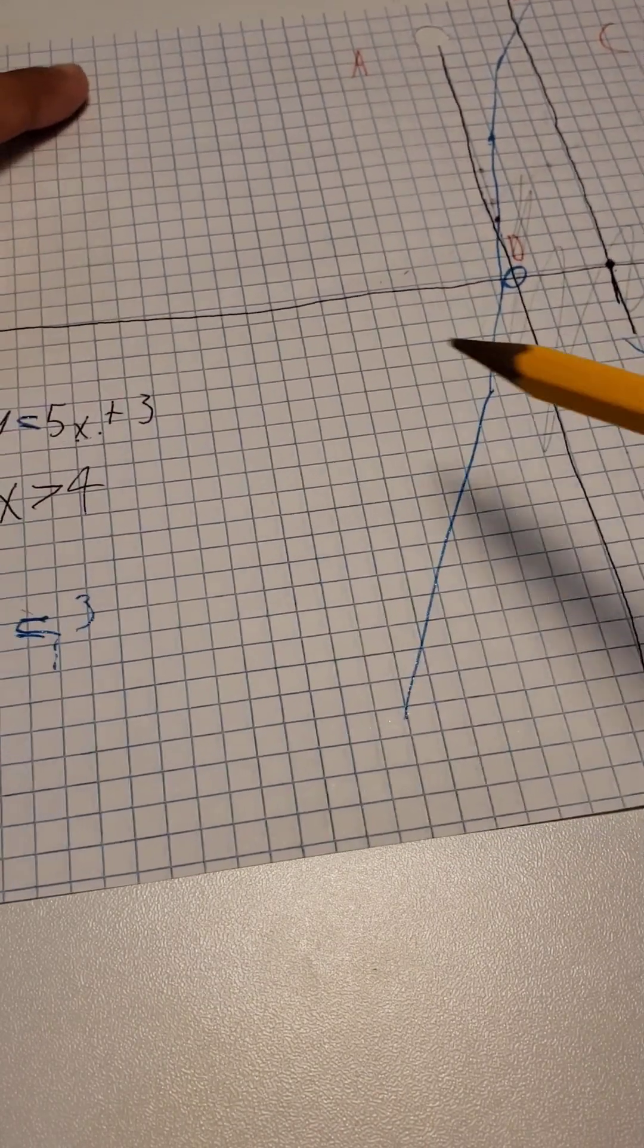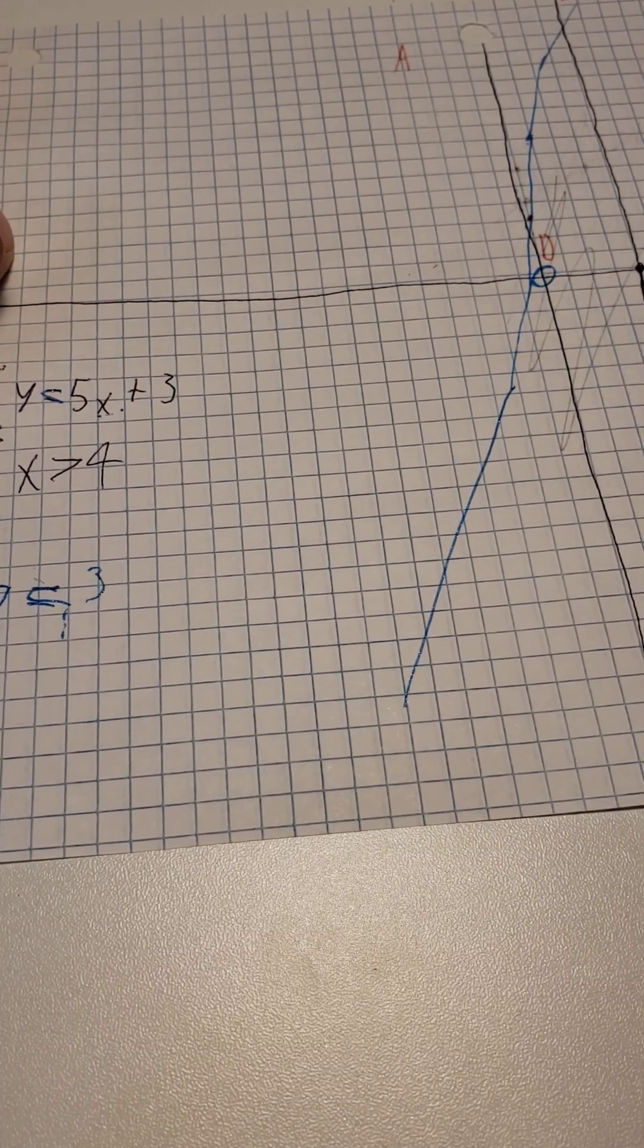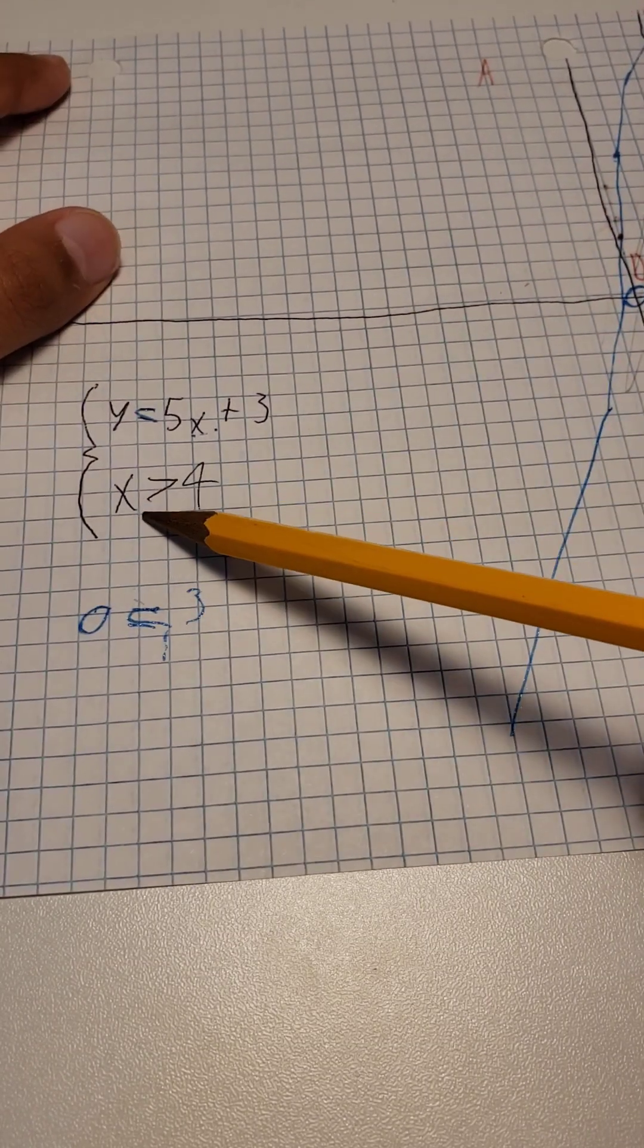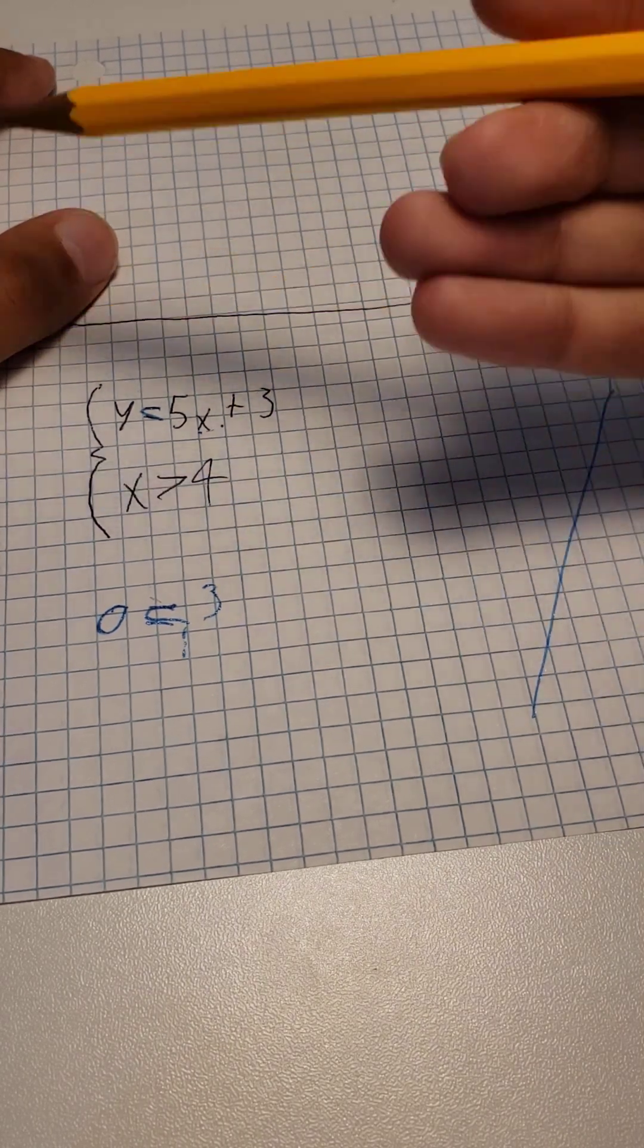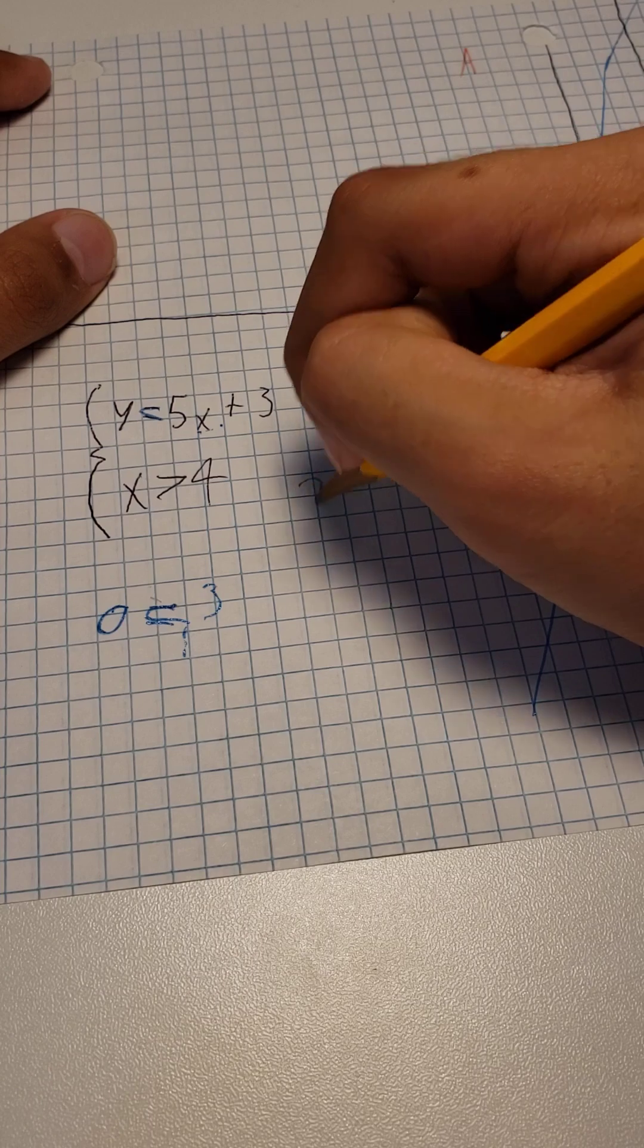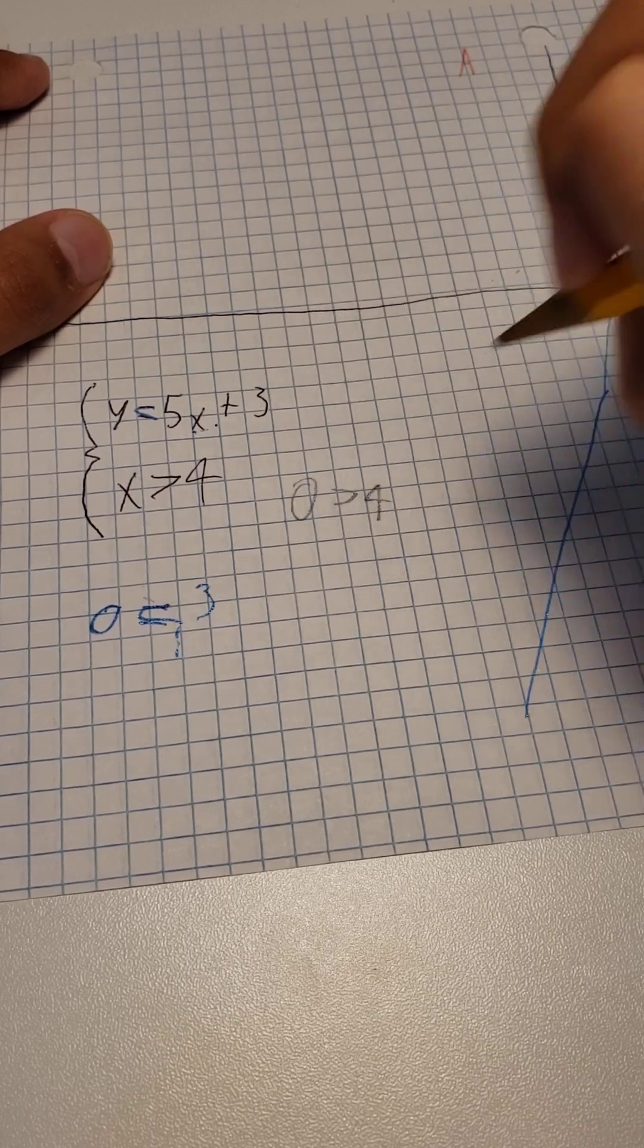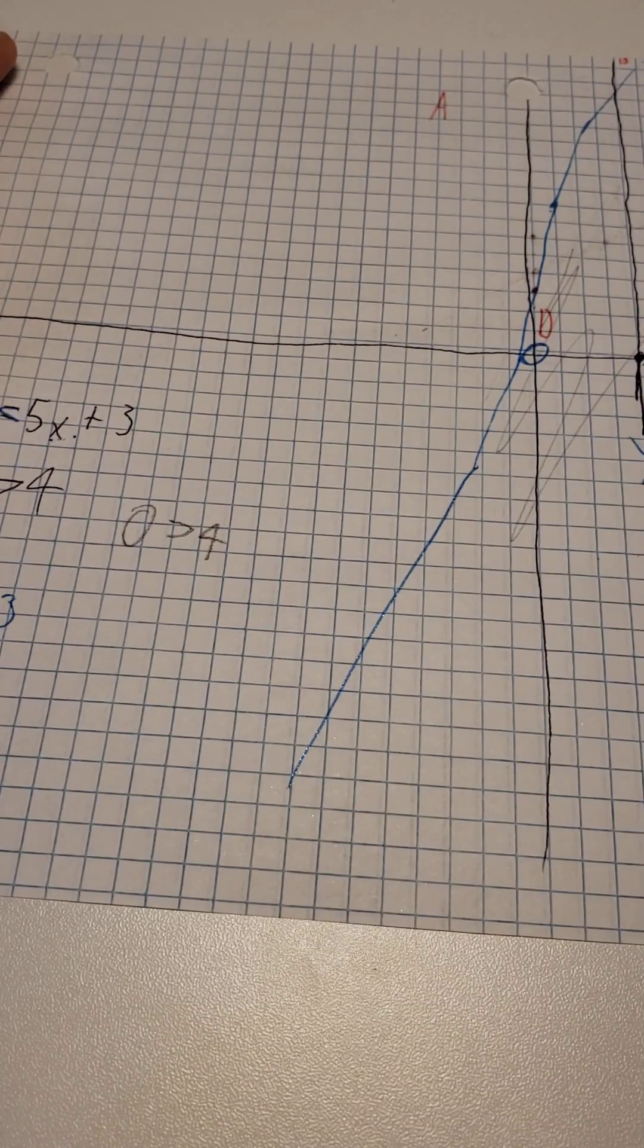Now, for this one, let's also do the point 0, 0. Let's do 0 over here, and then we get 0 is greater than 4. Obviously, this is not true.